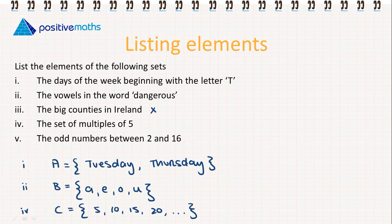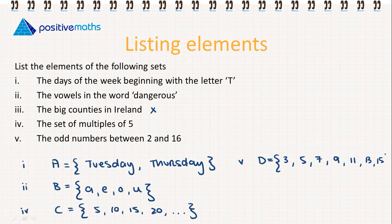And part five: the odd numbers between two and sixteen. So this is going to be set D equals {3, 5, 7, 9, 11, 13, 15}.